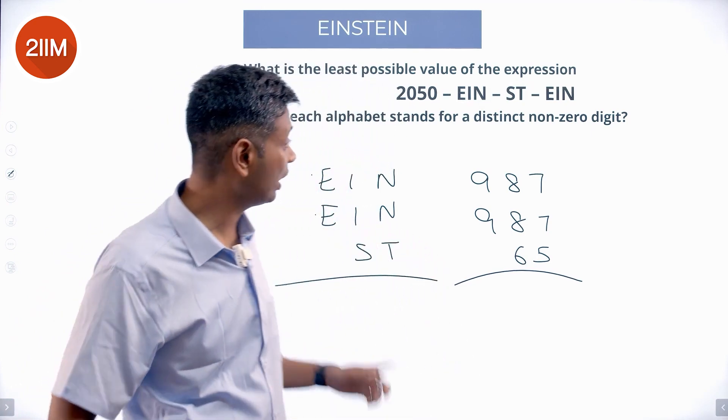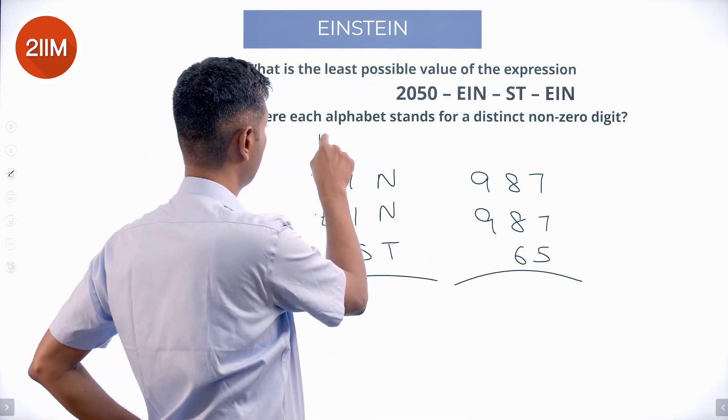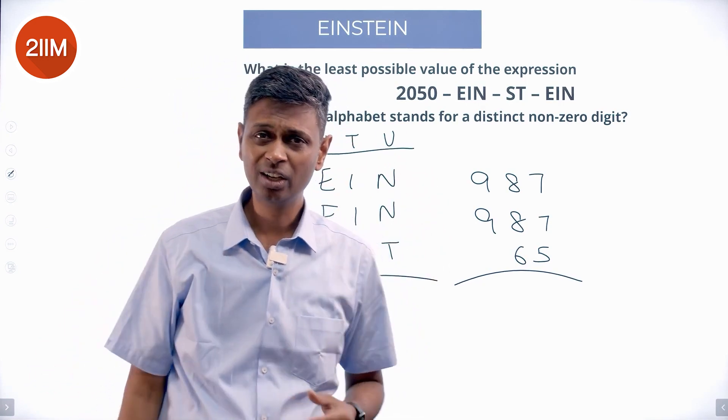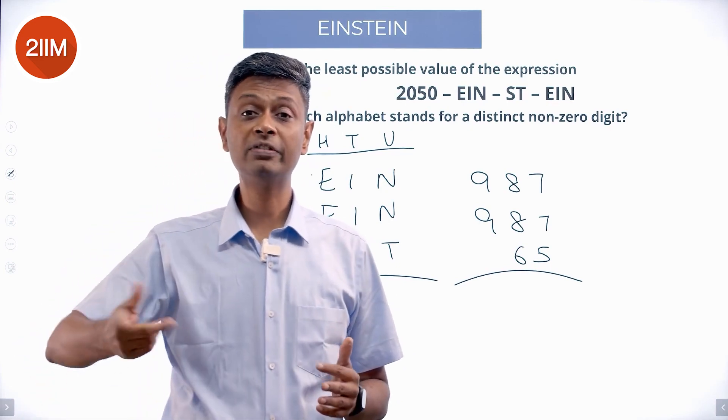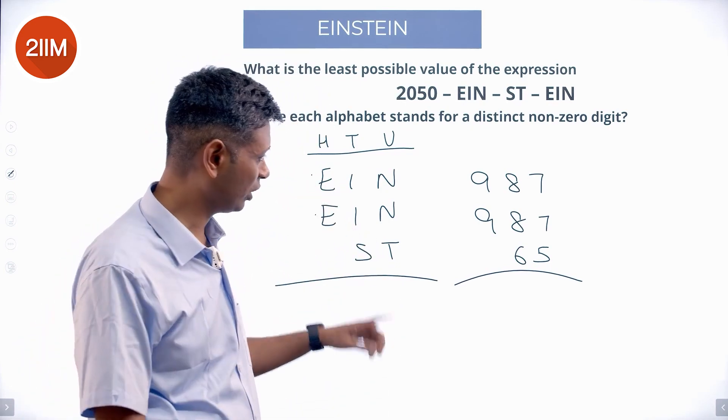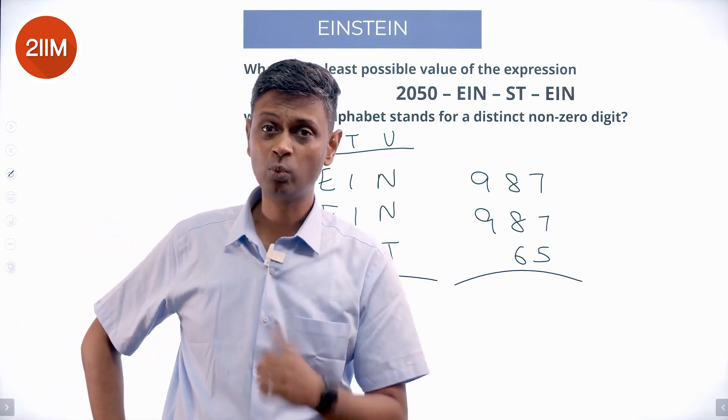This way my total will be as high as possible. I want the hundreds place to be the maximum digit, tens place to be the maximum available after that, units place to be the maximum available even after that. Put this as 9, this as 8, this as 7, 6, 5. This is correct. No, no, no, it is not correct.